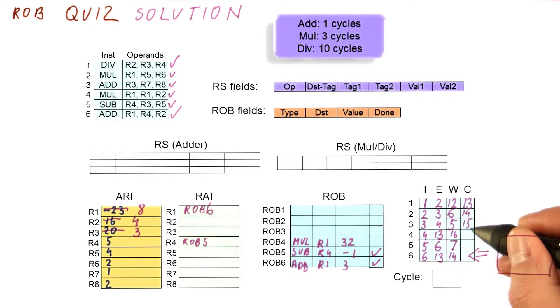So basically, in cycle 15, we have committed this. In cycle 16, we cannot commit this because the broadcast is happening in 16. We can only commit it at 17.